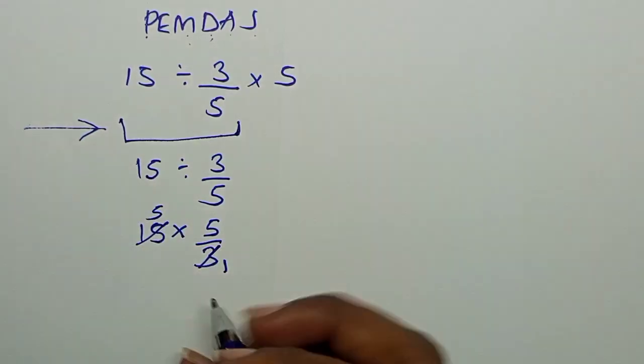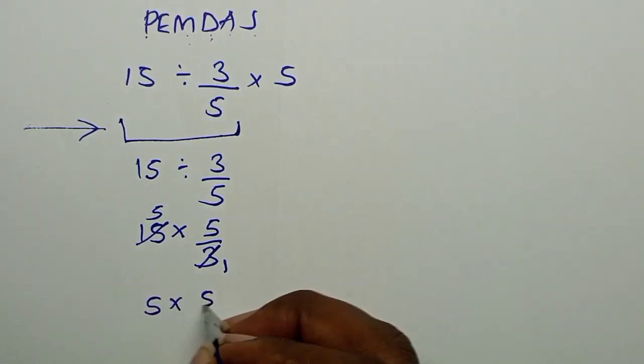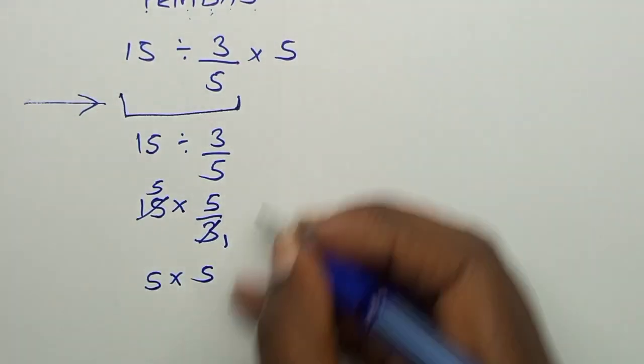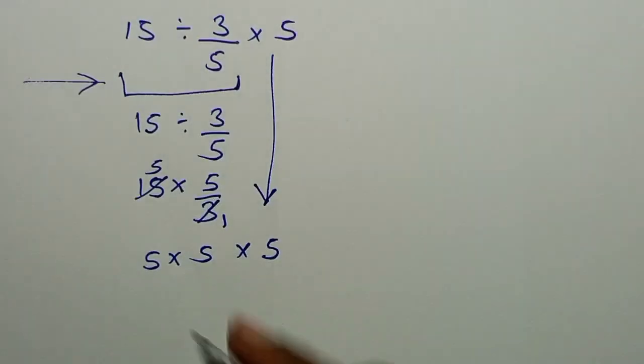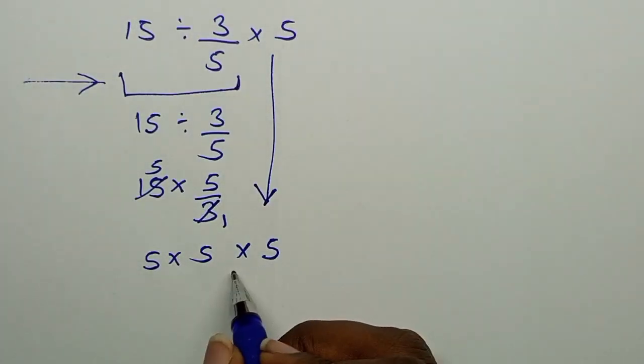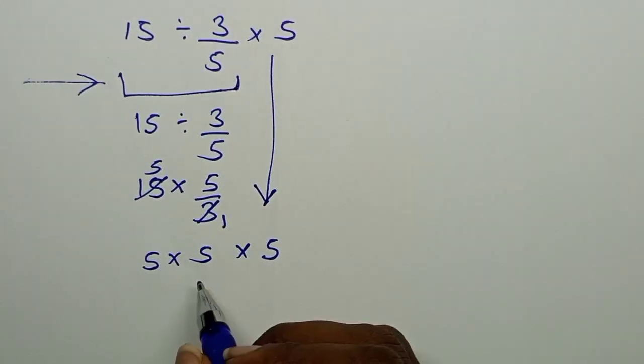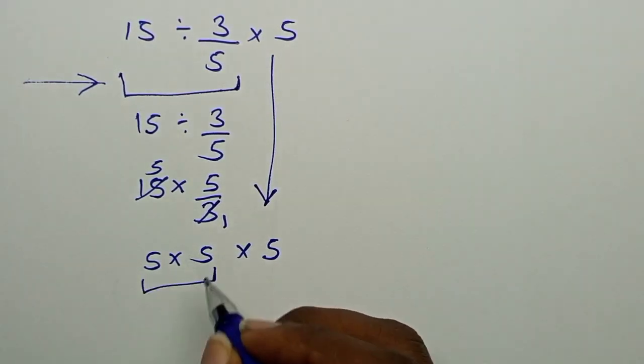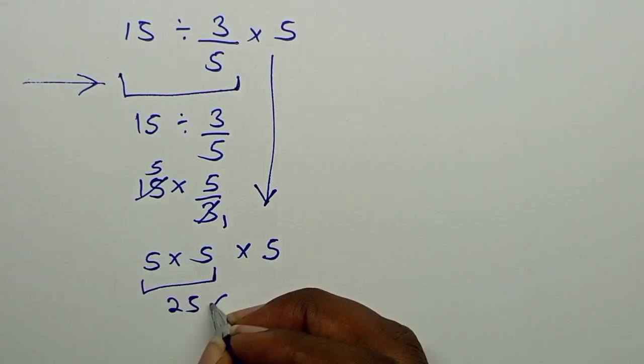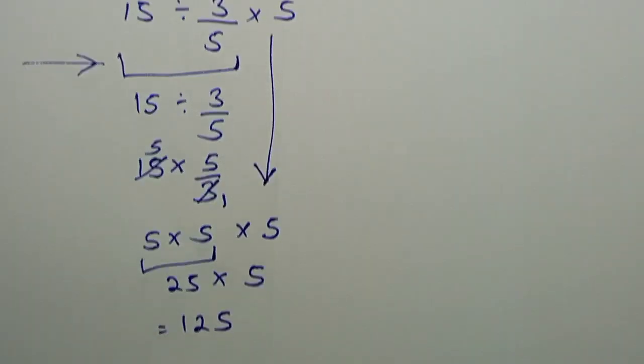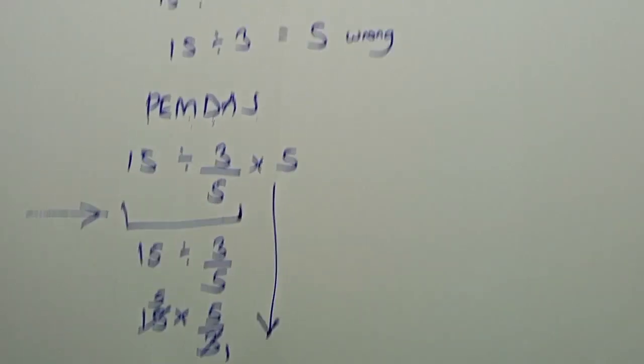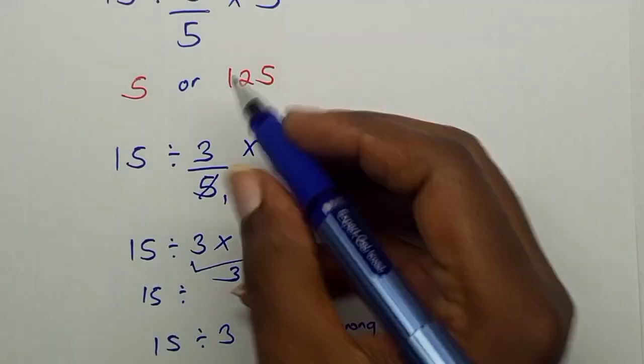We shall have 5 times 5, then we bring this back, times 5. Here they are both multiplications. So 5 times 5 times 5 is 25, then times 5. 25 times 5 equals 125. So 125 was the correct answer here.